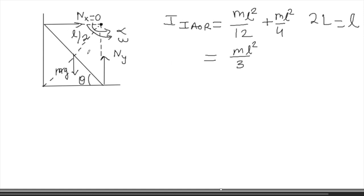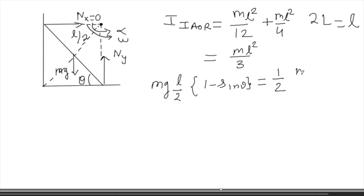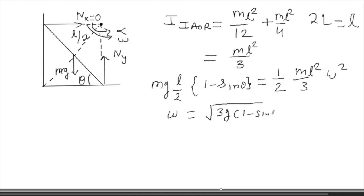Now we apply energy conservation. Initially the rod was vertical and the center of mass was at a height l by 2. Now the center of mass is at a height l/2 sinθ. The loss of potential energy equals the gain of kinetic energy, which is (1/2) × (ml²/3) × ω². From here I can calculate ω, which equals √(3g(1 − sinθ)). This is the angular speed of the rod about the instantaneous axis of rotation.